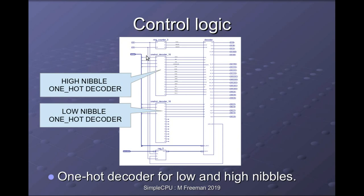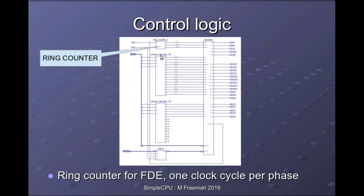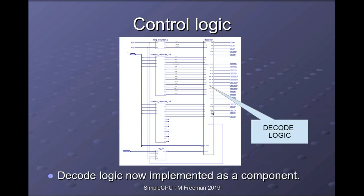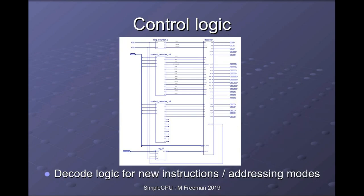In the control logic, additional decode logic was added for register and register indirect instructions. We still have the original decoder examining the high nibble of each instruction, but we've added an additional 4-to-16 one-hot decoder for the low nibble to decode register and register indirect instructions. The outputs from these decoders plus the state information from the ring counter and status register are passed to the decode logic to generate the processor's control signals.